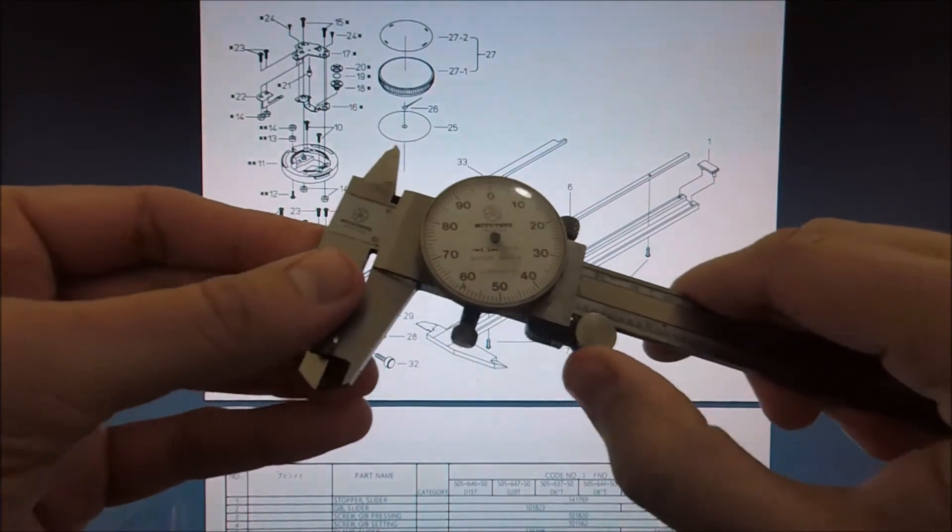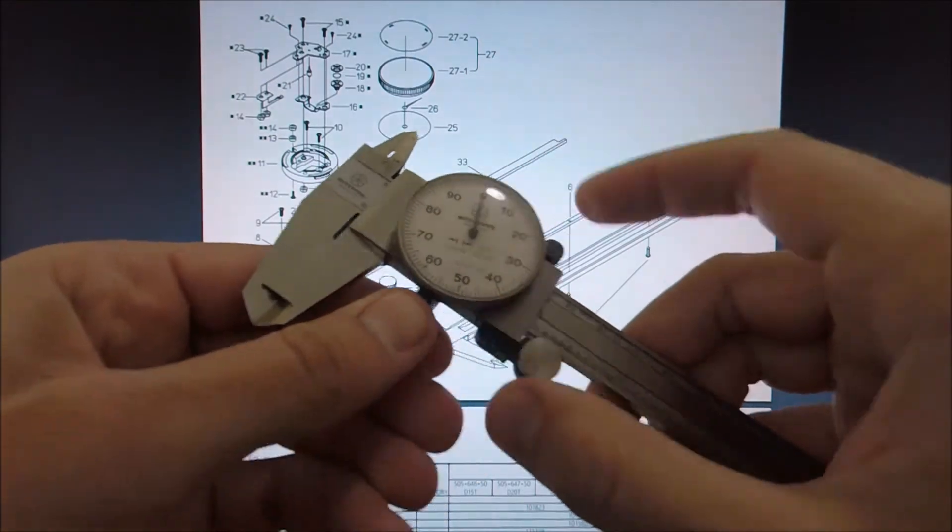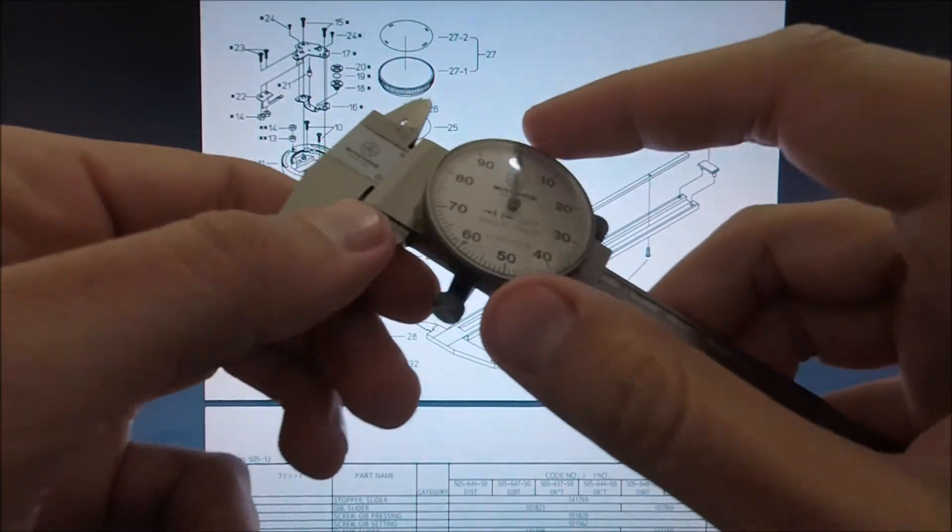So I have these Mitutoyo dial calipers and the bezel doesn't lock. This plastic, what they call the bezel clamp, is just worn out.